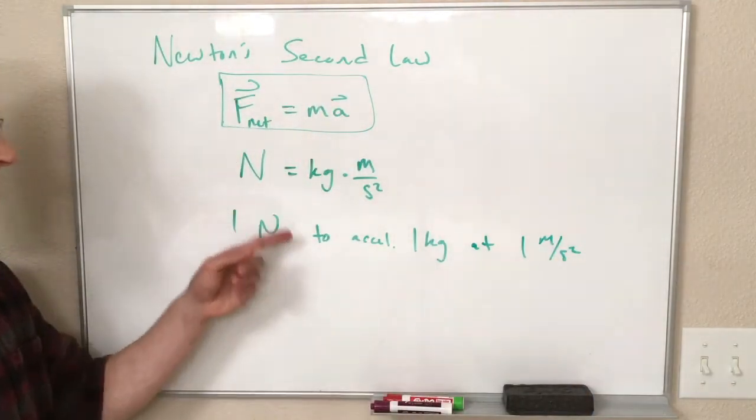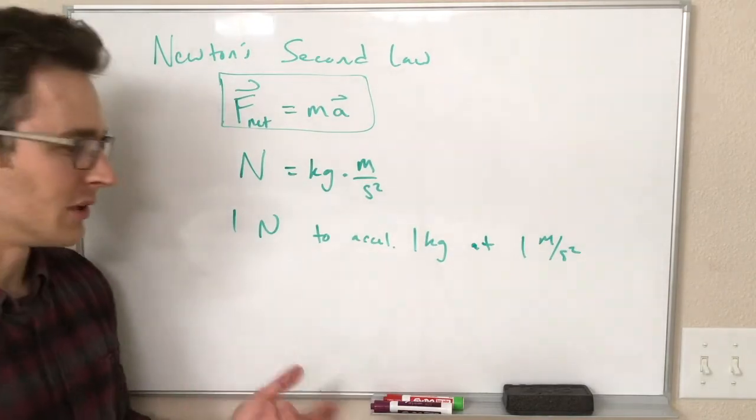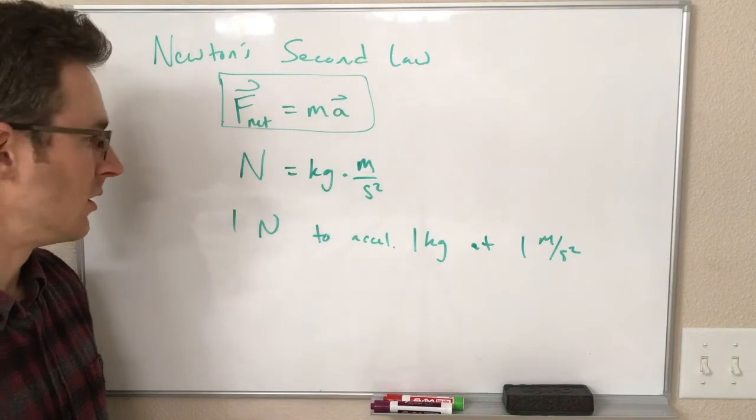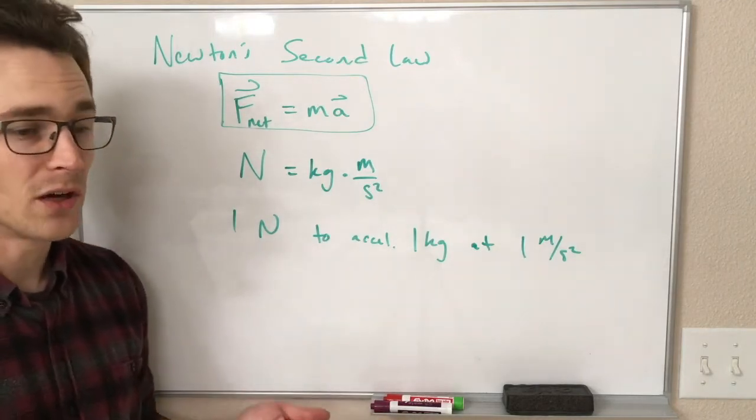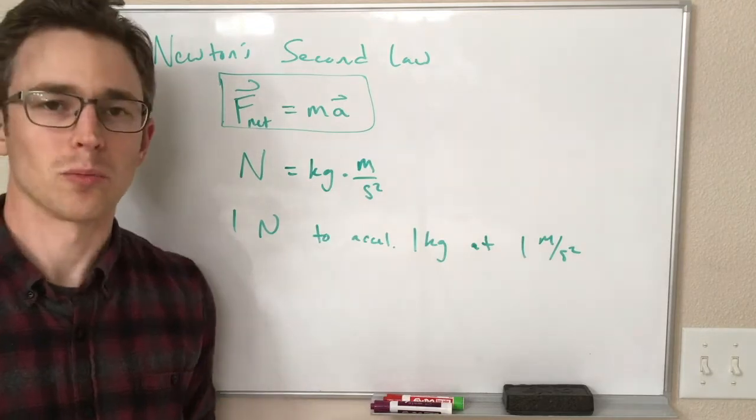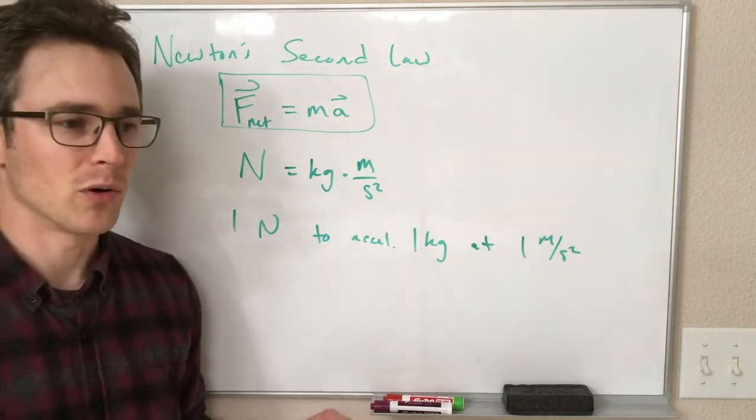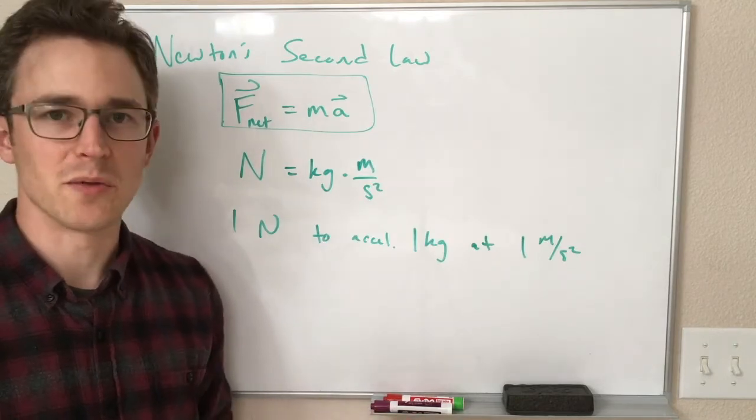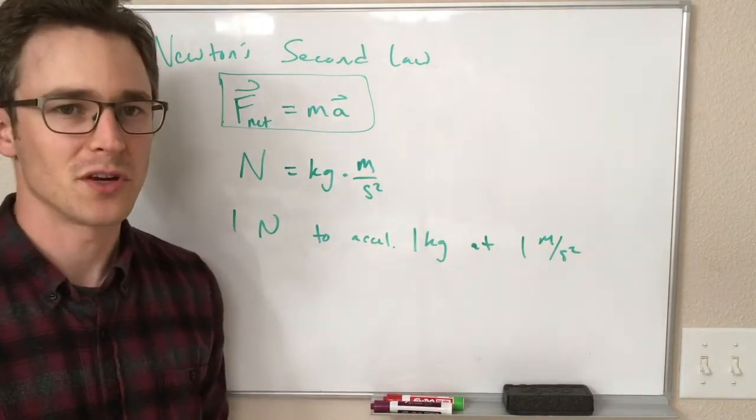So one Newton is what it takes to accelerate one kilogram of whatever at a rate of one meter per second squared. In terms of forces that we are familiar with, one Newton is a pretty reasonable sized force. It is the weight of roughly like a quarter pound. So imagine a hamburger or meat substitute patty in your hand, and that's exerting about one Newton of force on you.